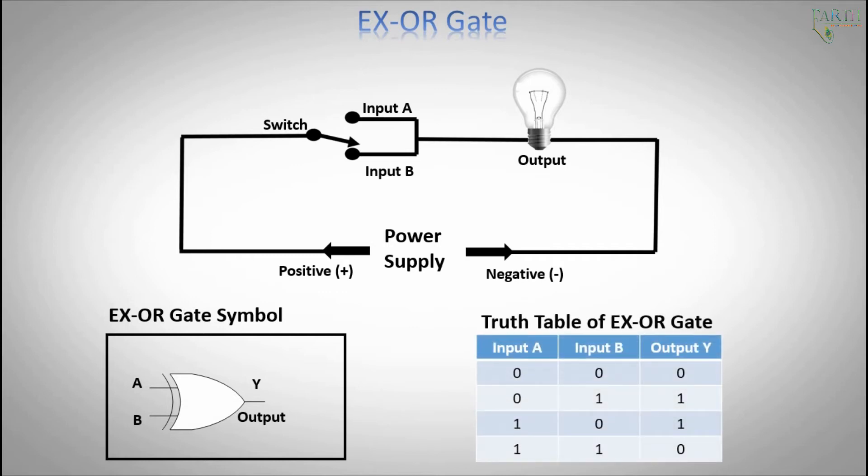The truth table above shows that the output of an exclusive OR gate only goes high when both of its two input terminals are at different logic levels with respect to each other. If these two inputs, A and B, are both at logic level 1 or both at logic level 0, the output is a 0, making the gate an odd but not the even gate.